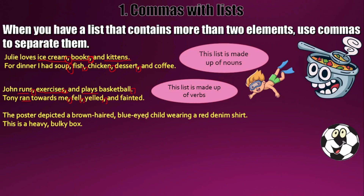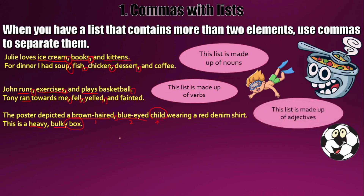Now, lists of adjectives. 'The poster depicted a brown-haired, blue-eyed child wearing a red denim shirt.' Here, brown-haired and blue-eyed are two adjectives describing the noun 'child.' Since there are two adjectives in the list, I used one comma to separate them. Second example: 'This is a heavy, bulky box.' Heavy and bulky are both adjectives describing the box, so I used a comma between them. This list is made up of adjectives.